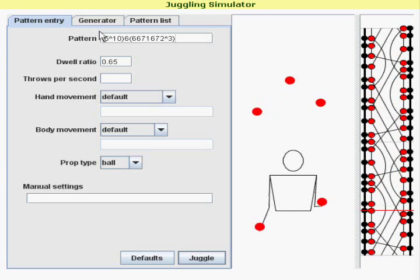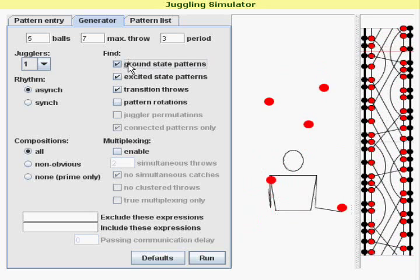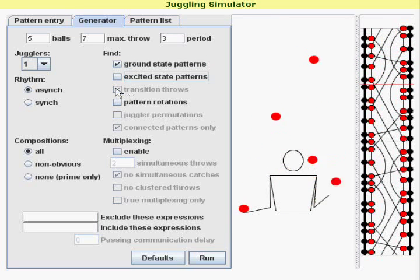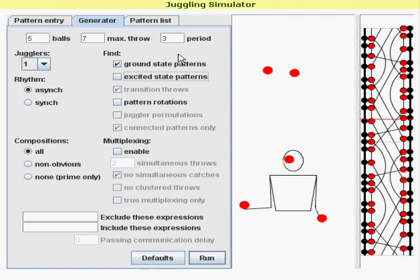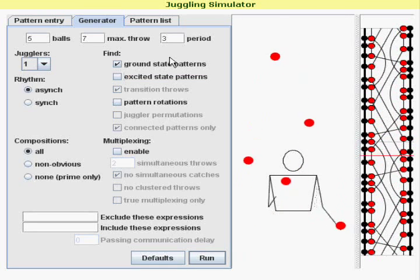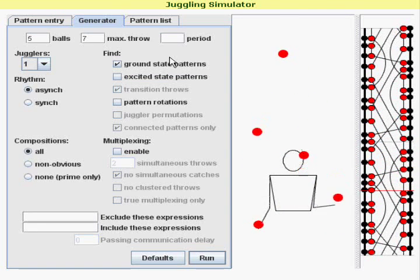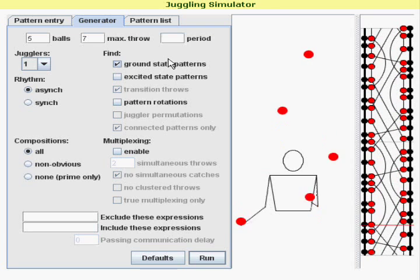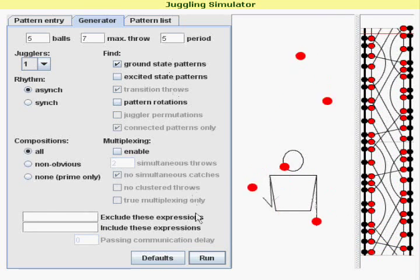We don't want to just transition back to the ground state by doing something like a boring multiplex that makes us stop the pattern or throw one high to go back to the cascade. I consider those to be boring transitions. I want something much more subtle than that that will catch the viewer off guard. So in this case, we're going to actually search the generator for a ground state siteswap.